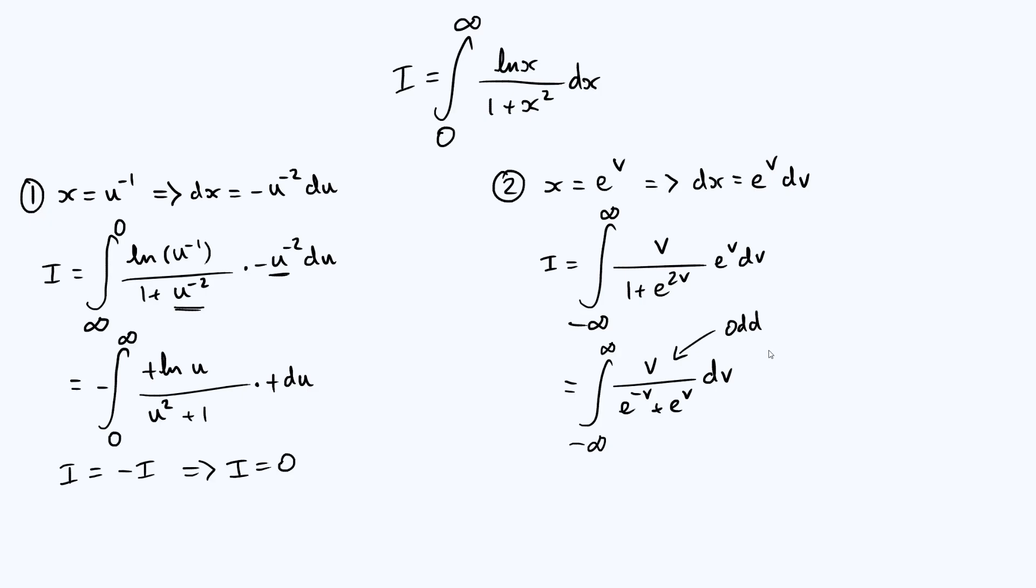And if we integrate an odd function over a symmetrical region or over all of space, as we're doing here, then we get 0 because essentially the positive area on one side cancels the negative area on the other side, thinking of the integral as the area under a curve. And so we're integrating an odd function, over all possible values of v, and therefore we get 0. So there you go, two ways to understand why this integral ends up being 0.